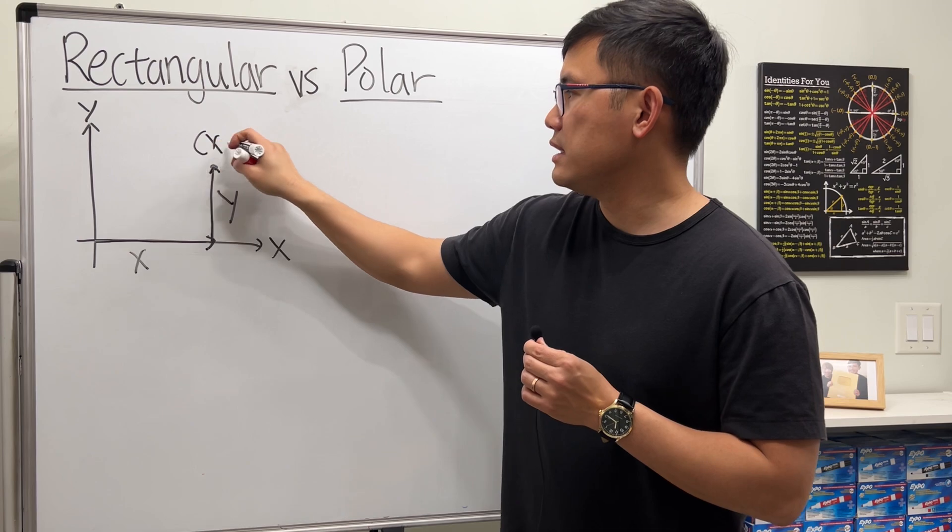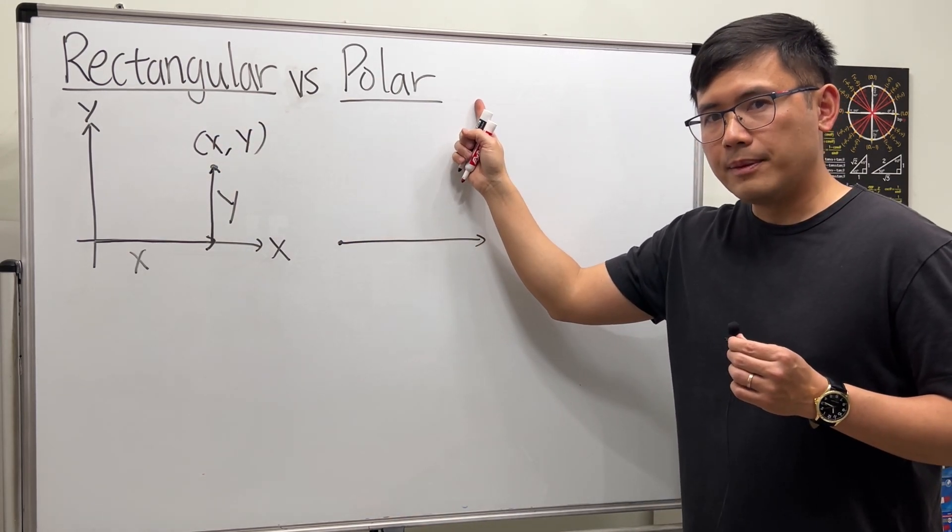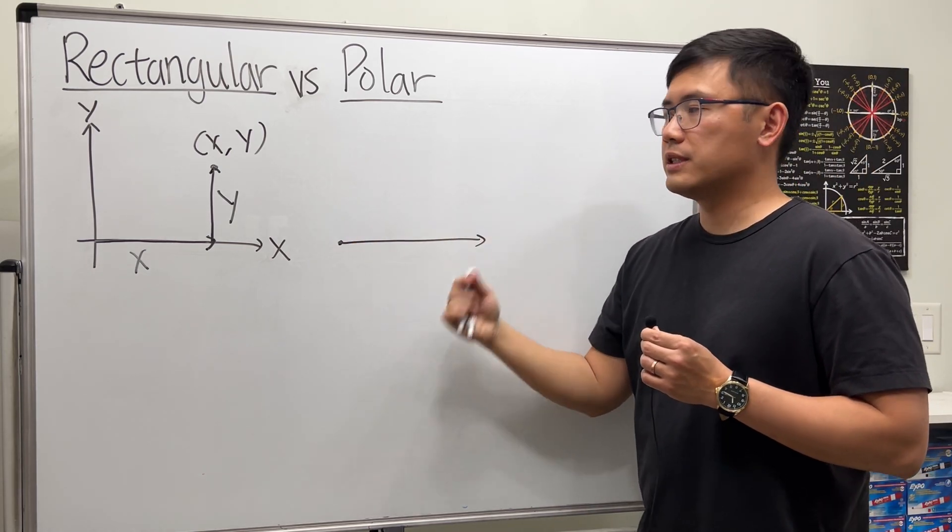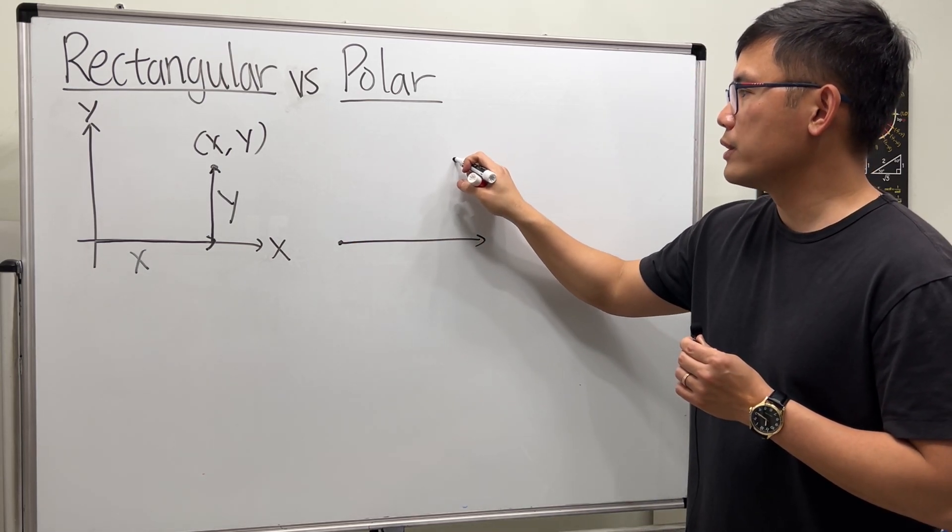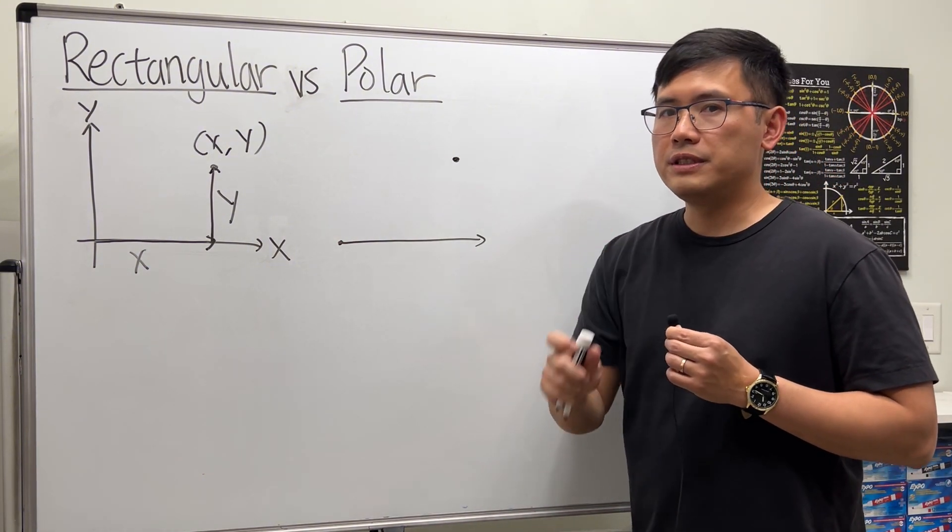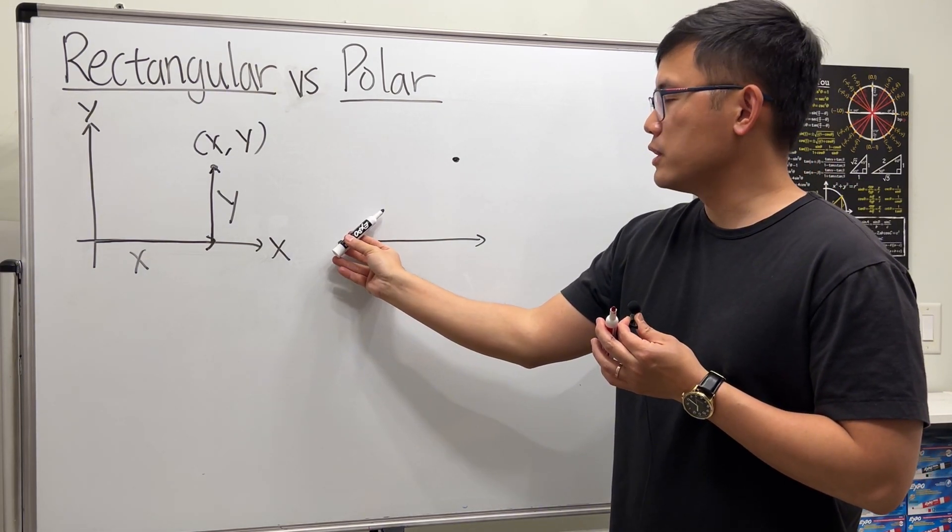If we have a polar system, we look at this direction first. Let's say we have a point right here. We would like to know how to go from this point to here. First thing, you should rotate it so that you can see the point right in front of us.